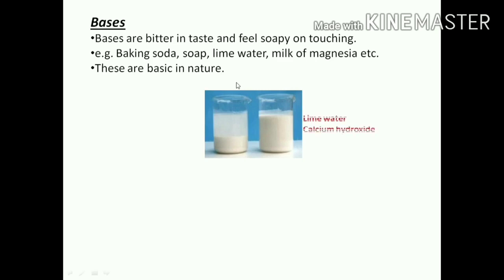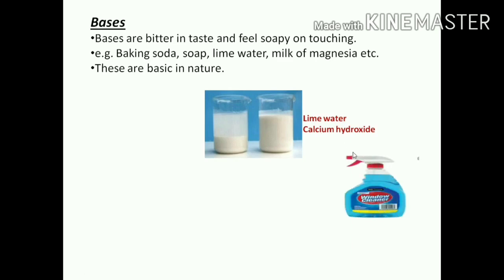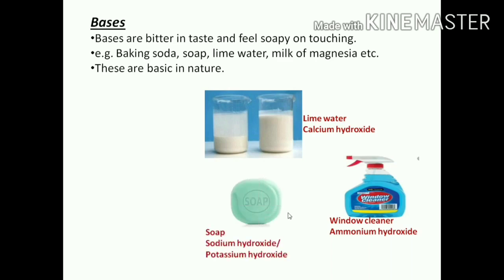Let's see those examples. First one is lime water - 'chuno pani' - the chemical name of lime water is calcium hydroxide. Next is window cleaner - sometimes you are using window cleaner for cleaning windows. That window cleaner is ammonium hydroxide. Next is soap - we are using soap to clean ourselves. This soap is either sodium hydroxide or potassium hydroxide.